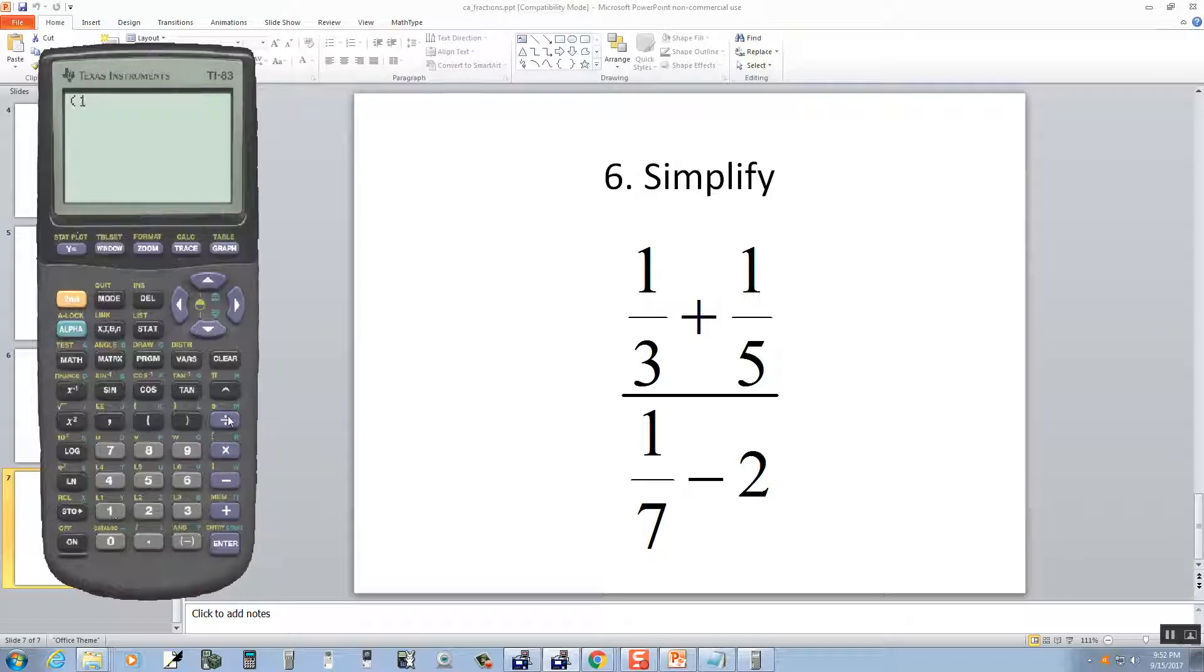1 divided by 3, plus 1 divided by 5, closing parentheses, divided by beginning parentheses, 1 divided by 7, minus 2, closing parentheses.